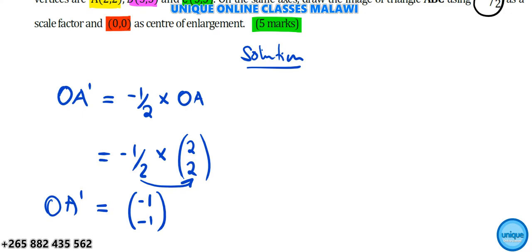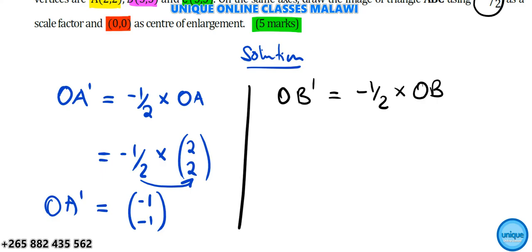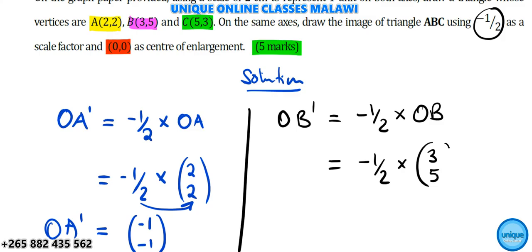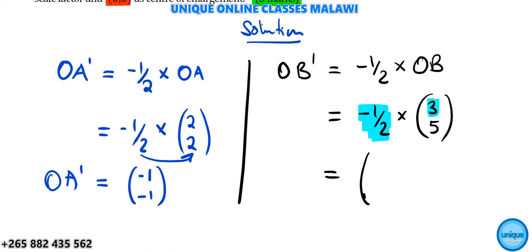OA' equals (-1, -1). Similarly, to find OB', we multiply negative half by OB, where B is the original point (3, 5). Negative half times 3 gives negative 1.5.